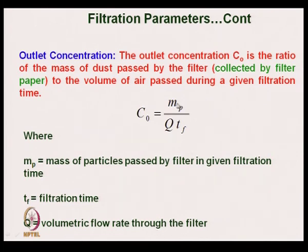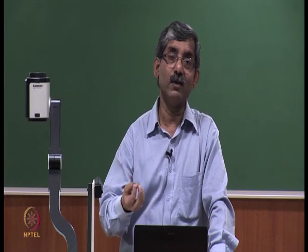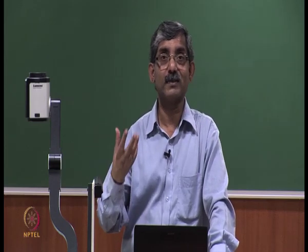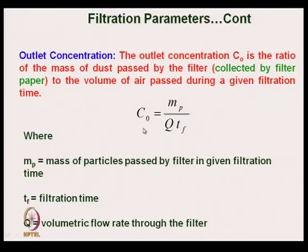Multiplying Q with Tf gives the total volume of air passed through the filter medium. The ratio of MP to total volume gives the outlet concentration. This outlet concentration is very important as it shows the effectiveness of the filter fabric — it indicates the quantity of particles still present in the air after filtration.